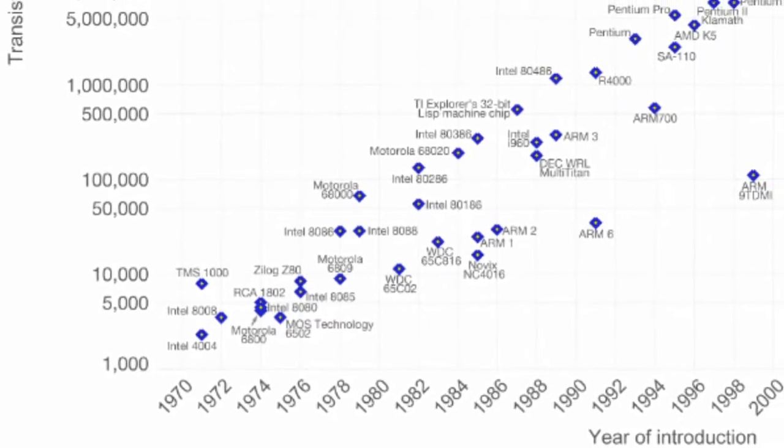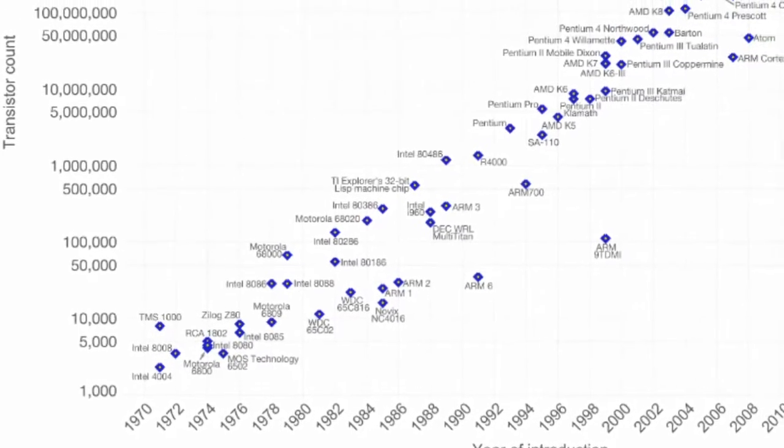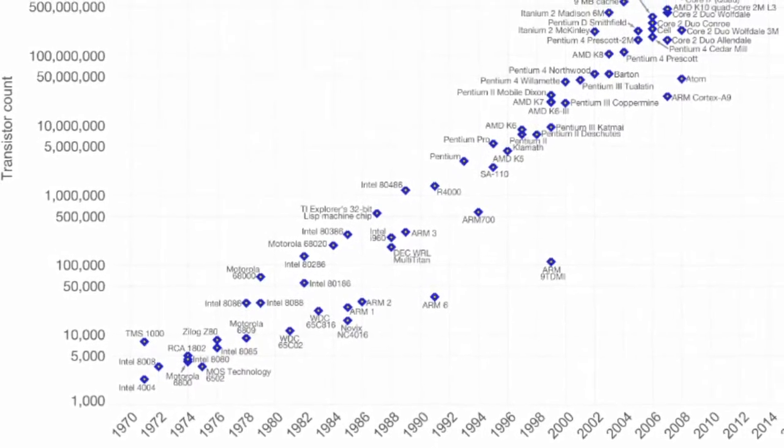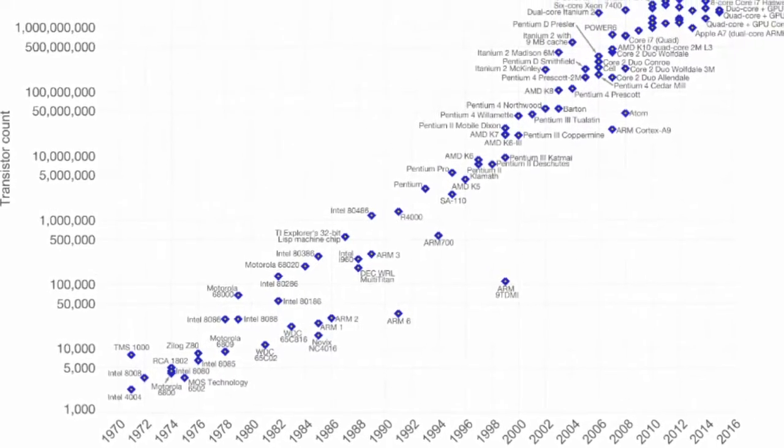This advancement only happened in a span of nearly five decades. It was observed that every two years, overall processor power will double. This is called Moore's Law, by Gordon Moore. However, in recent years, there's a stagnation in processing power, meaning Moore's Law is slowly getting irrelevant, but that's beside my point.